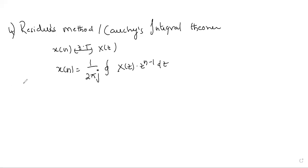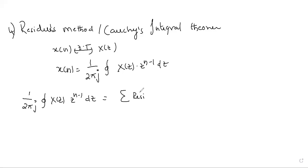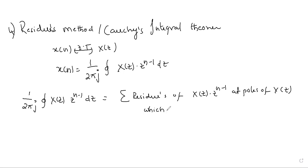From Cauchy's integral theorem, this closed integration — that is, 1 over 2 pi j times the integral of X of Z times Z to the power N minus 1 dZ — is equal to the sum of residues of X of Z times Z to the power N minus 1 at the poles of X of Z which are inside the closed curve. Here the curve is a closed circle, with the region of convergence defined as mod Z greater than p.